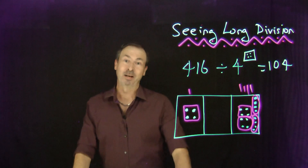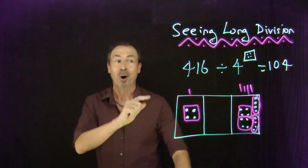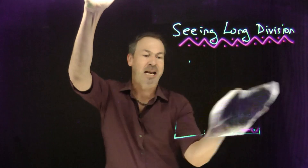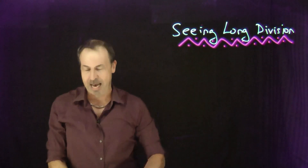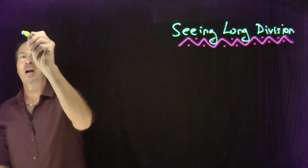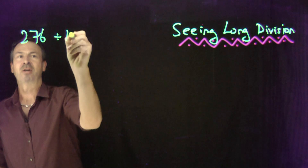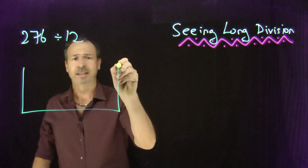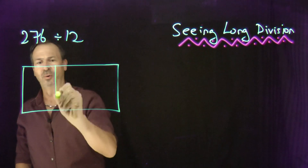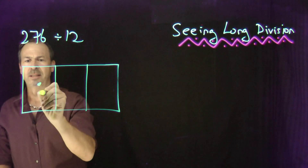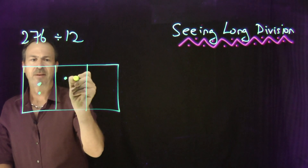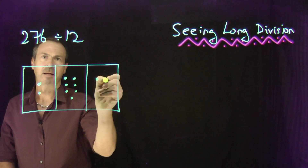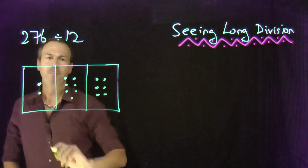This regrouping idea is particularly handy when it comes to doing multi-digit division. Let's go up a notch in difficulty: 276 divided by 12. Start by drawing a picture of 276 — two hundreds, seven tens, and six ones.